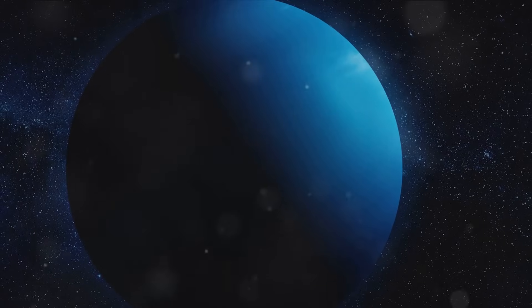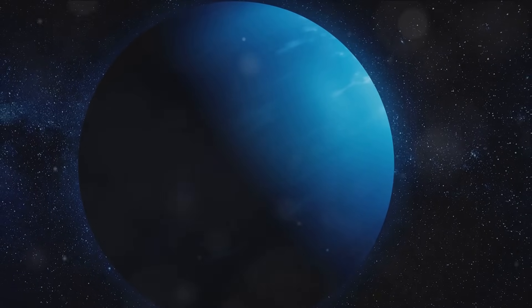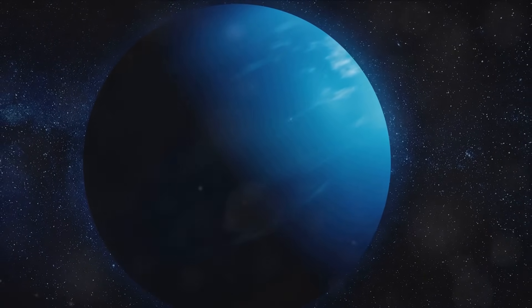Neptune also has a system of faint rings and at least 14 known moons. The largest of these, Triton, is gradually spiraling inward and will eventually be torn apart by Neptune's gravity.